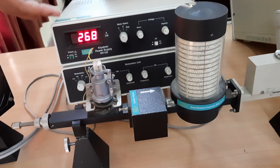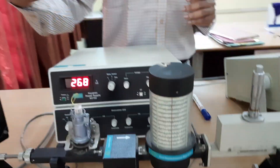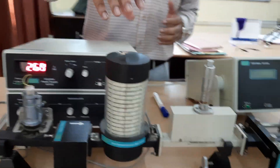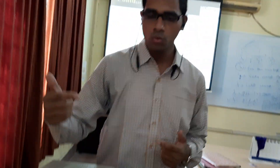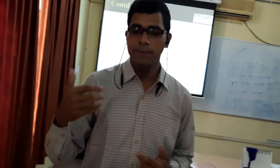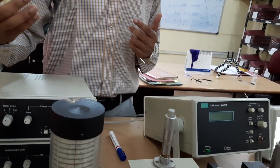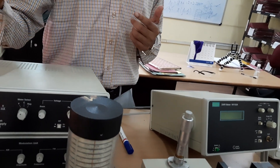Suppose the reflex klystron is generating 9.8 GHz. During the rotation, the resonant frequency of this frequency meter also becomes 9.8 GHz — that means resonance occurs. When the resonance occurs, the impedance is minimum. The wave always wants to travel in the low impedance path.